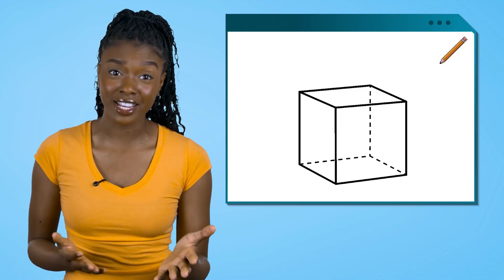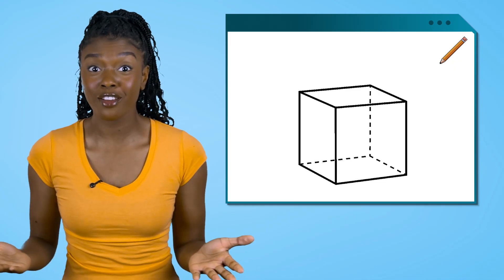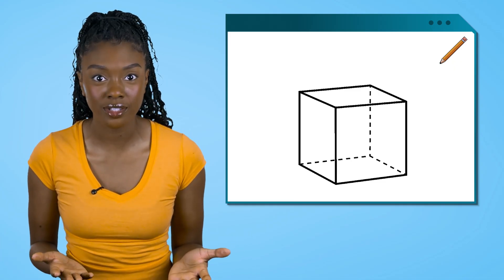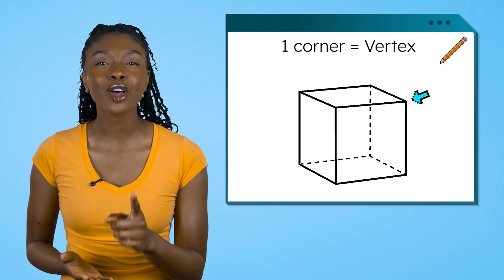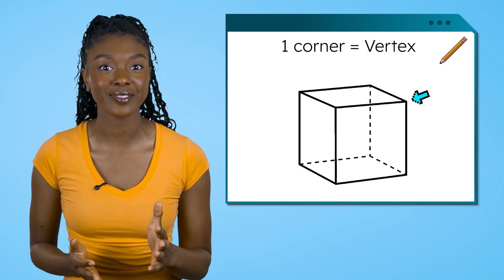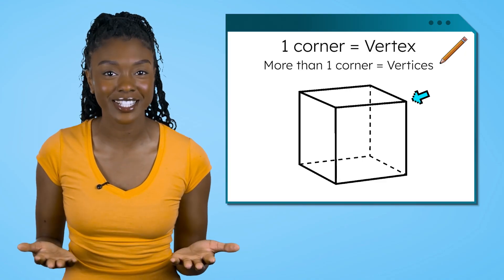Since we've already figured out the faces and edges, the only part of the cube left is these corners. On 3D shapes, a corner is called a vertex. When we have lots of corners, we call them vertices.